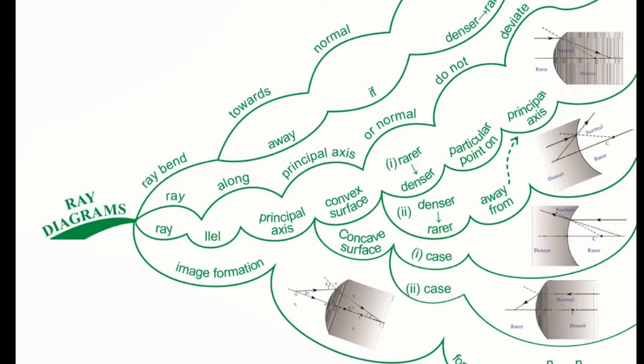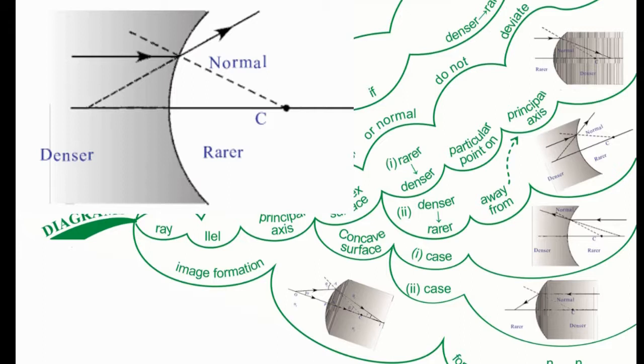If the ray is from denser to rarer medium, it will move away from the principal axis, as shown in the figure.